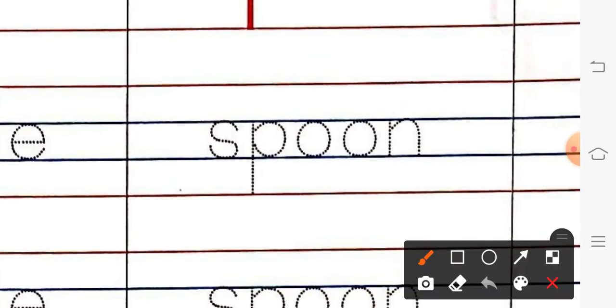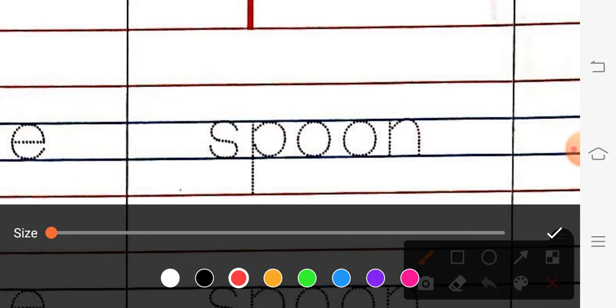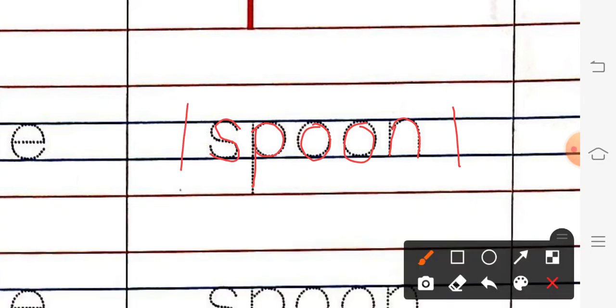Second one is Spoon. So, S, P, O, O, N. Spoon. You have to write in the four lines. The two lines in the middle. You have to write in the two lines. Okay, kids?